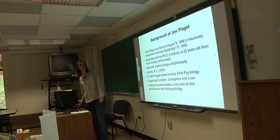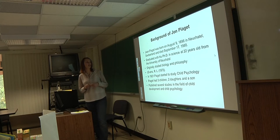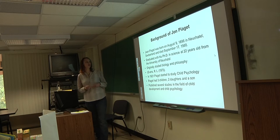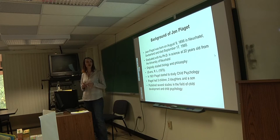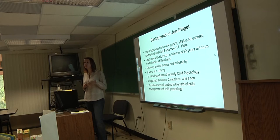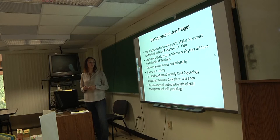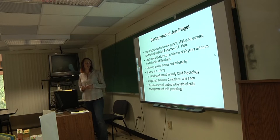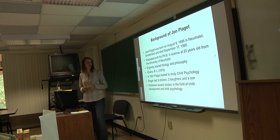John Piaget was born on August 9, 1896, in Neuchâtel, Switzerland, and died on September 17, 1980. He graduated with his PhD in science at 22 years old from the University of Neuchâtel, originally studying biology and philosophy — so he didn't initially start working with children. In 1921, Piaget began studying child psychology. He had three children: two daughters and a son, and published several studies in child development and child psychology.